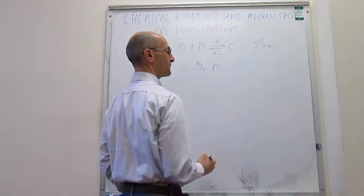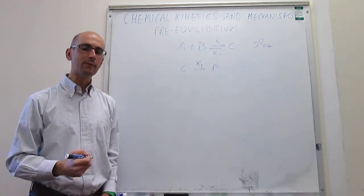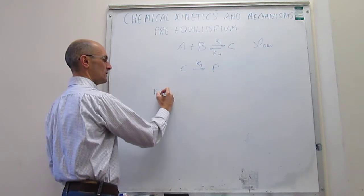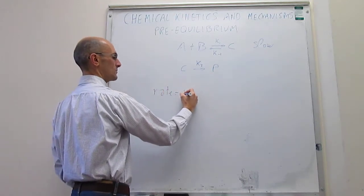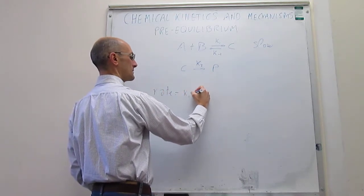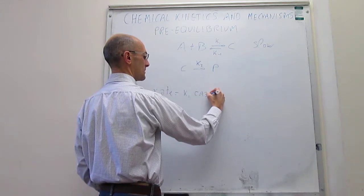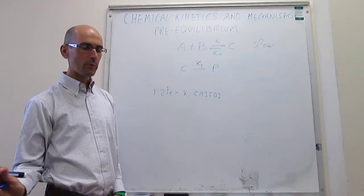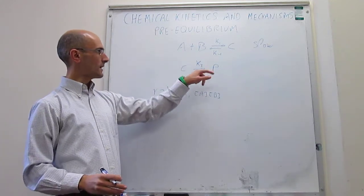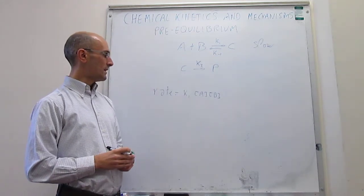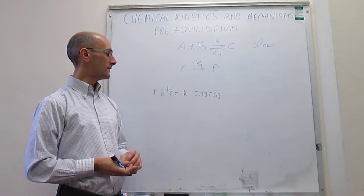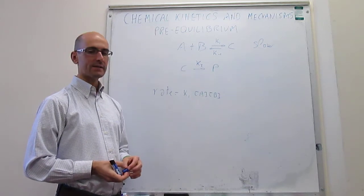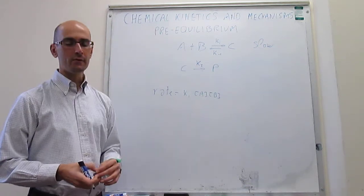This one would be the slow one. Because the slow step determines the rate, then the overall reaction in that case will be simply rate equals k1 times the concentration of A times the concentration of B. That would be the overall rate. We don't have to worry about the second step or the reversible step. As long as that's a slow step, then the rate will be determined simply by that expression.